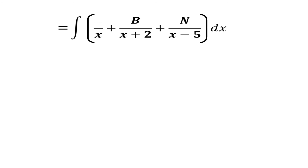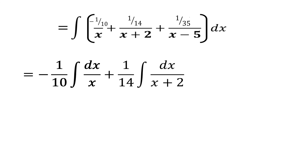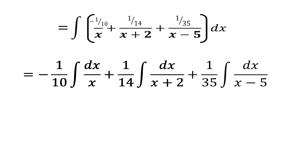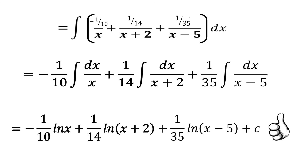With A = −1/10, B = 1/14, and N = 1/35 substituted back, we expand and integrate each term using the logarithm formula. Our final answer is: −(1/10) ln|x| + (1/14) ln|x + 2| + (1/35) ln|x − 5| + C.